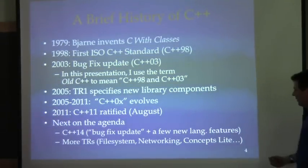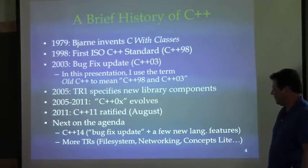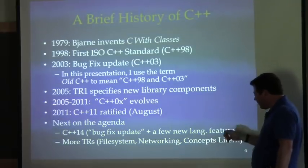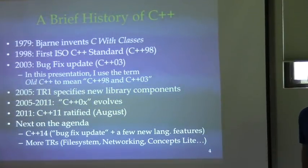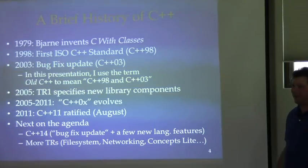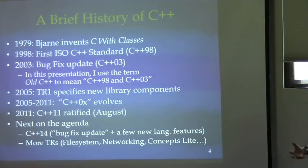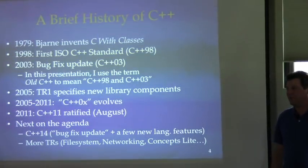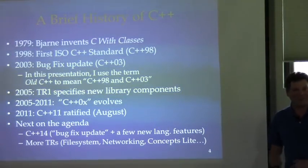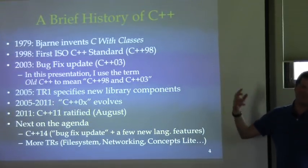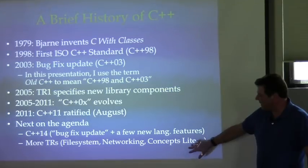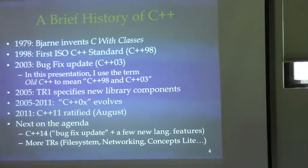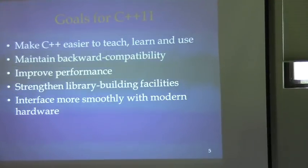Each of those will be in the form of a library report or technical specification that prepares people for what those features will look like when actually ratified. The ISO committee process is essentially an international treaty with a lot of politics involved — representatives go back to their countries, get things ratified, and come back. Library folks like Boost don't like to sit back and wait for decades, so all sorts of new facilities get invented and then make it into the language on a relatively fast track.